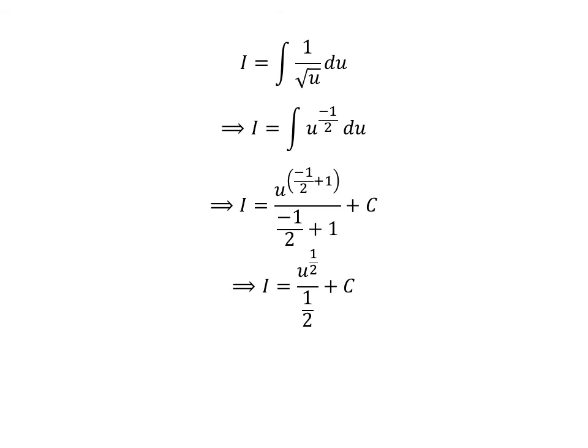As 1 plus minus half is equal to half, the exponent of u is half and the denominator is half. Further simplification gives us i is equal to 2 times square root of u plus capital C.